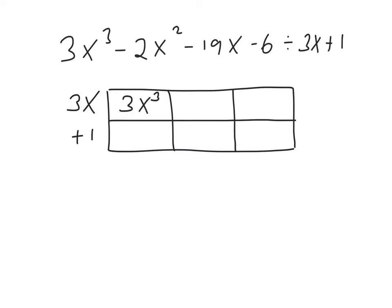Once we've done that, we divide this term here into the first term. The way you do that is you divide the number first. So 3 into 3 goes once. x into x cubed goes x squared times. So that will leave you with 1x squared here, or in other words just x squared.